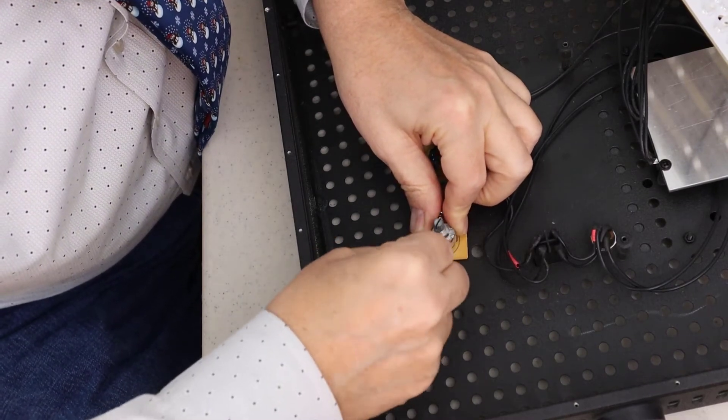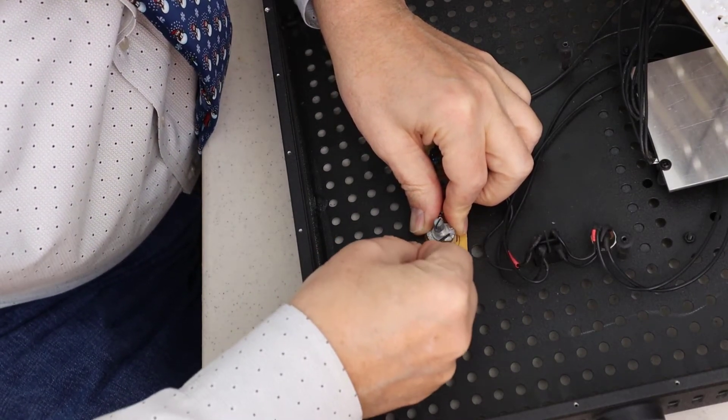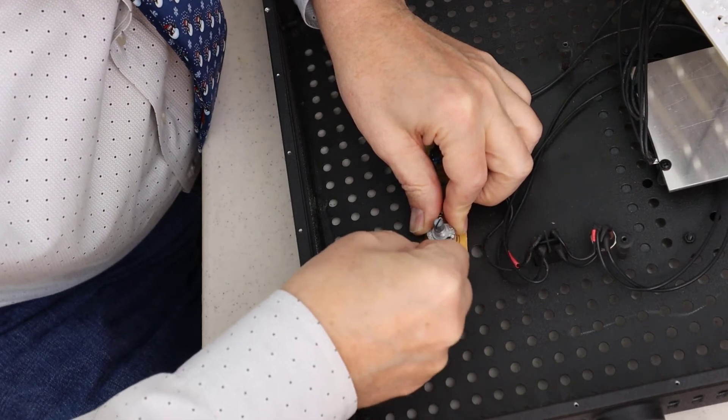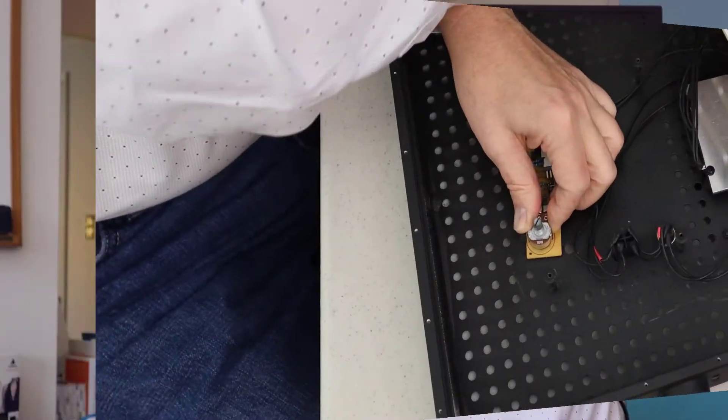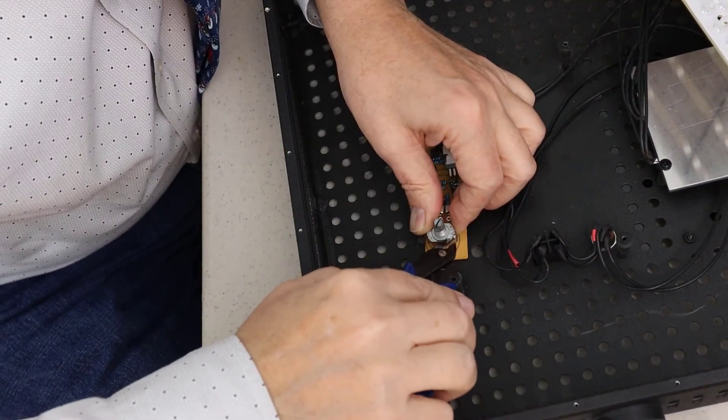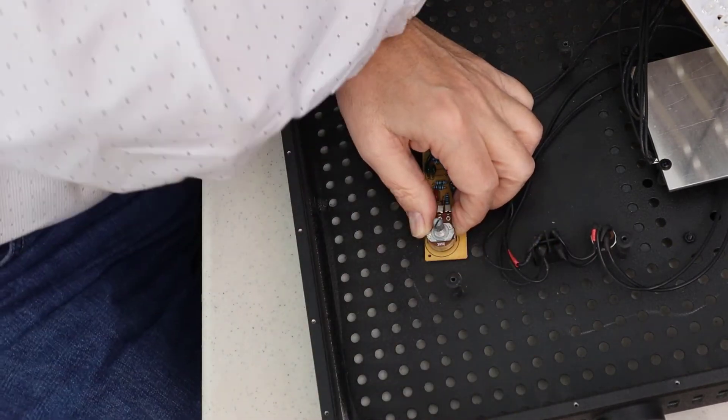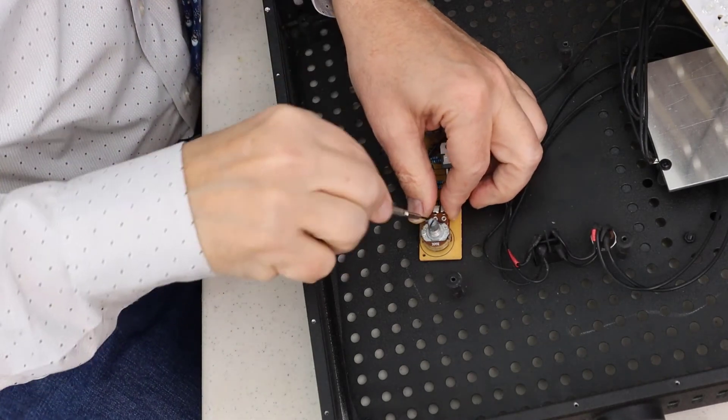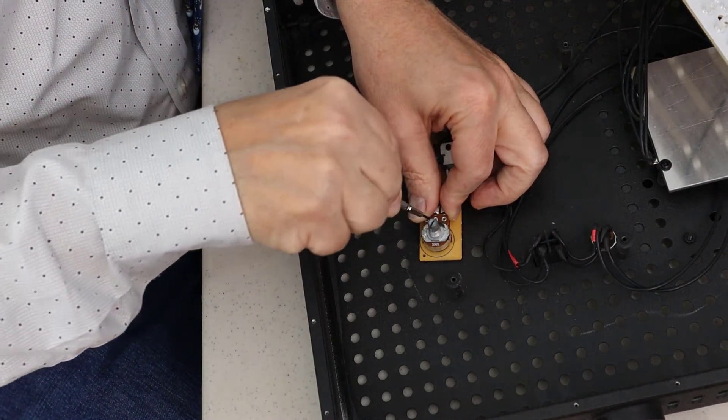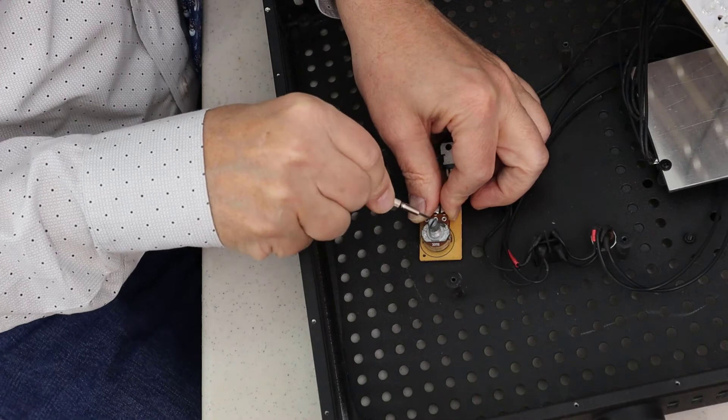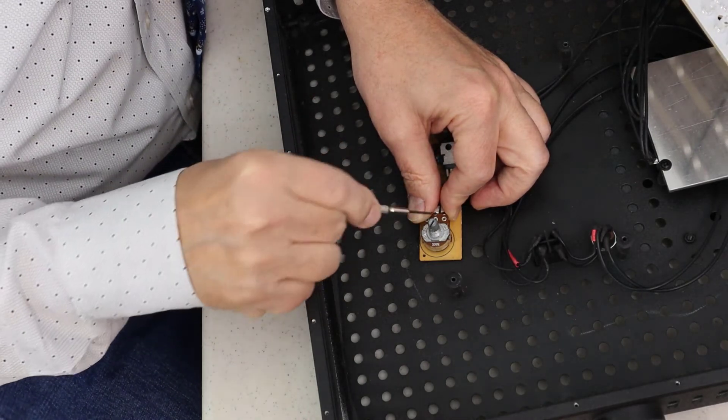But basically, I pop open the little tabs that hold the top in place. And I'm not using these snippers to cut anything. I'm just using it because I'm too lazy to go get a pair of needle nose. But I just use my tiny little screwdriver to lift up the tabs and then open them up so I can take the top off.